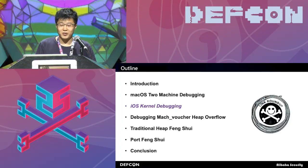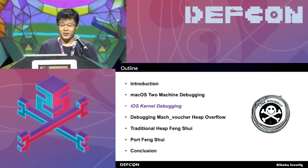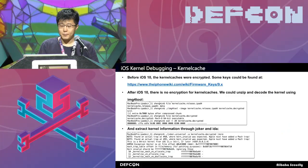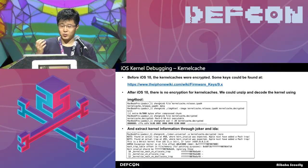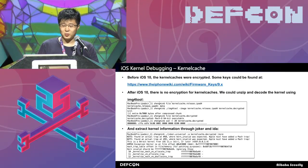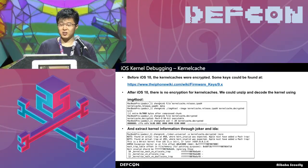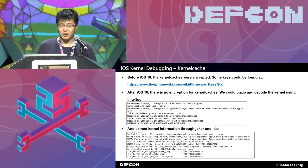Let's talk about iOS kernel debugging. We know that there are no official tools for iOS kernel debugging, but we can use some tricks to do that. Before we debug the iOS kernel, we need to get the kernel cache. Unlike macOS, we need to decrypt the kernel cache. Before iOS 10, the kernel cache was encrypted — you can find a key on the iPhone Wiki website and then decrypt the kernel cache.